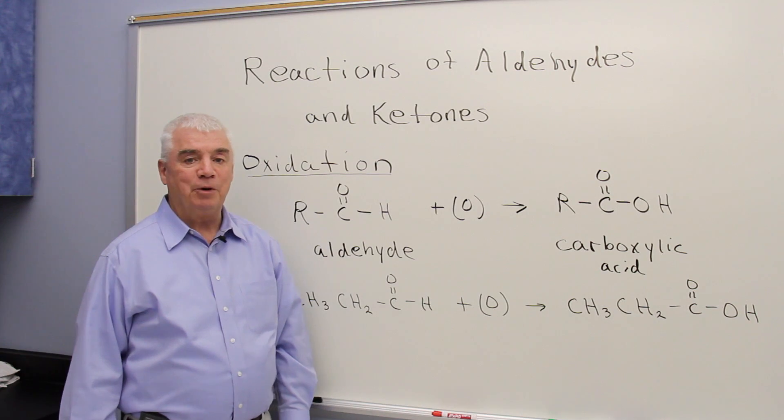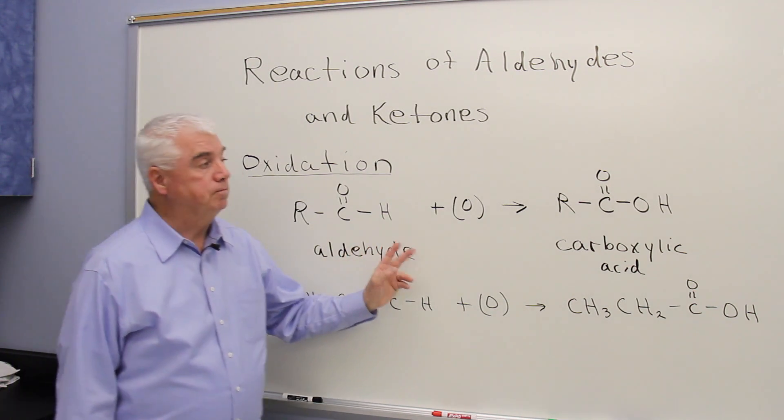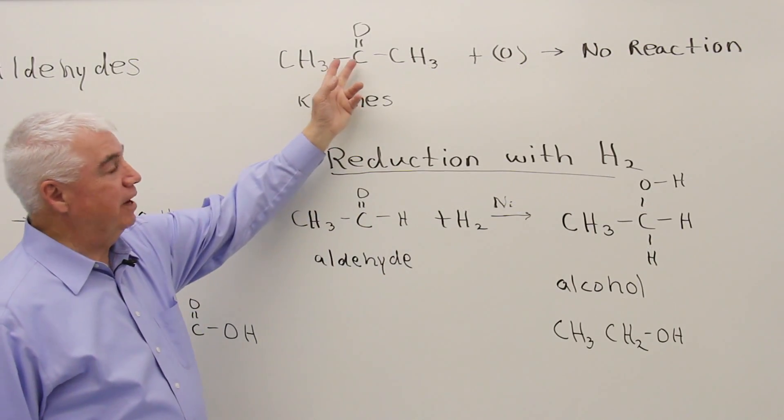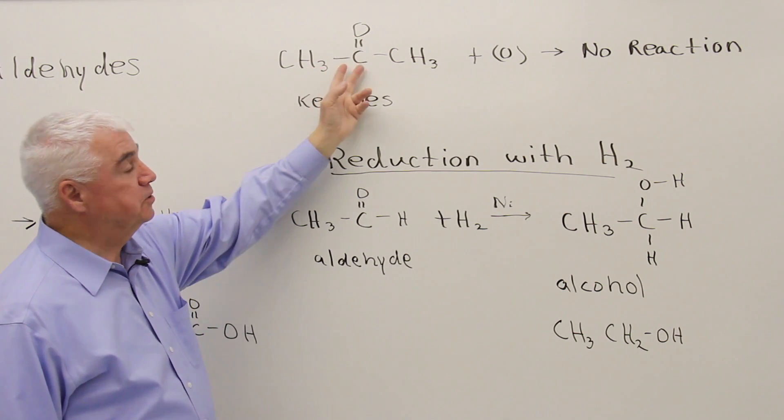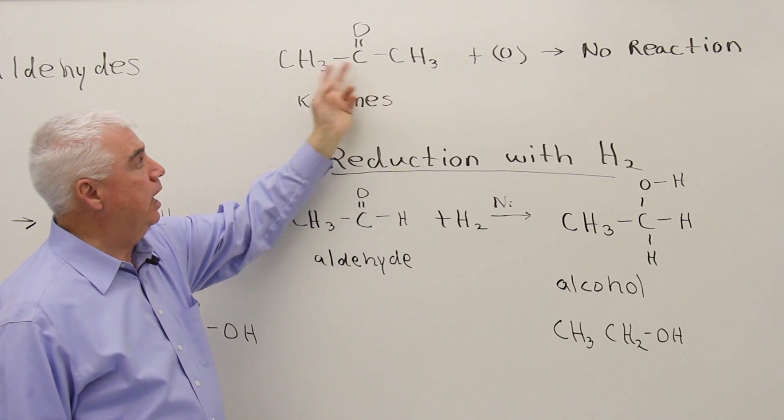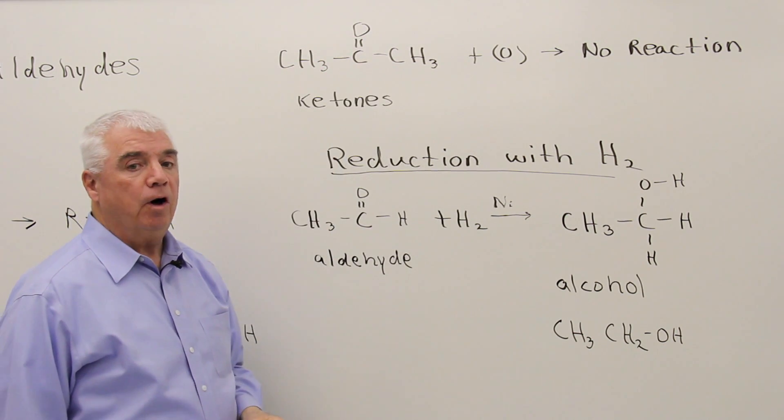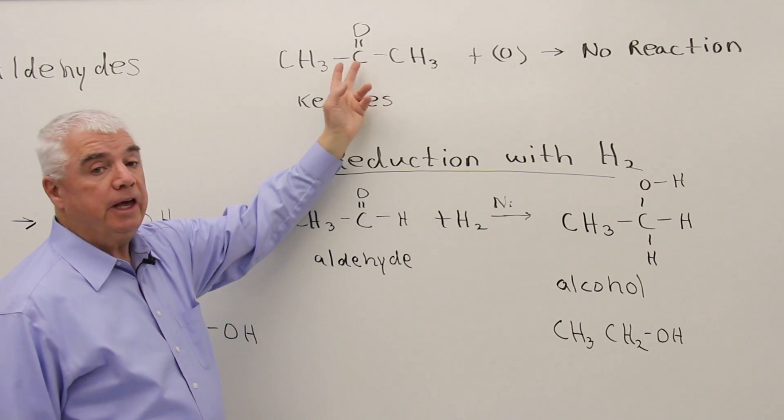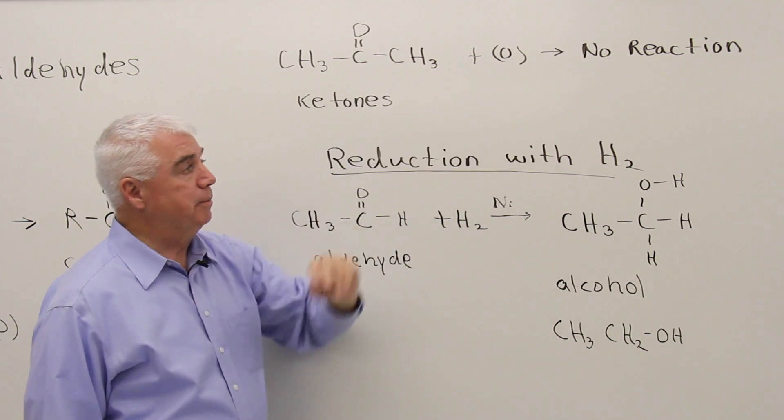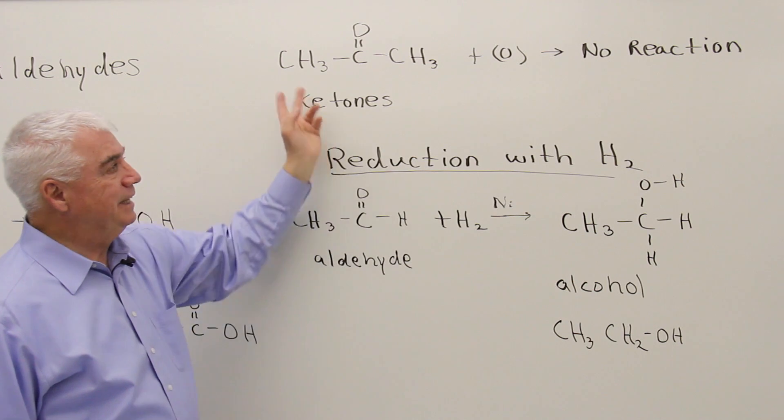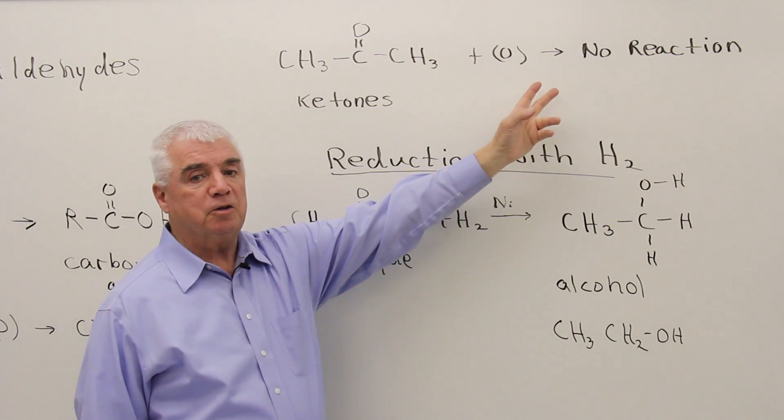and that'll help you predict the product. Let's look at a ketone. Ketones have the C double bond O, but instead of having the hydrogen of the aldehyde, they've got a carbon to the left and right. And because they lack that hydrogen where the oxygen typically inserts itself, ketones resist oxidation.